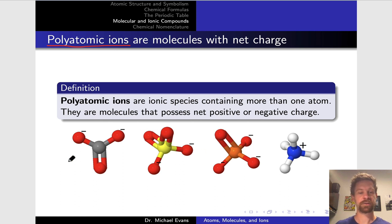Here I have four examples of polyatomic ions. The majority are negatively charged ions. But ammonium or NH4 plus is an important cationic example of a polyatomic ion.